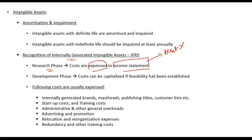In the research phase you expense all of those costs and do not take any to the balance sheet as an asset. Then comes the development phase. The development phase happens when you have established feasibility — you know it is feasible, you know it will be a software you will use, and it will generate economic benefits. Now you have started developing that software. In the development phase you can capitalize the cost. So from the development phase onwards, costs can be capitalized and recorded as an asset on the balance sheet under IFRS.